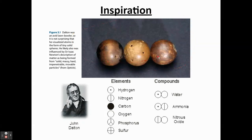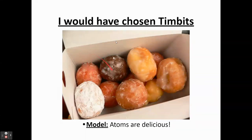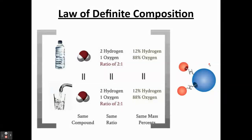Dalton's model was able to explain a lot of the laws at the time. For the law of definite proportion: water from two different samples is made up of 12% hydrogen and oxygen by mass. Dalton could say: I know why that is — oxygen has this mass and hydrogen has a different mass, and they combine in a ratio of one oxygen for two hydrogens. That explains the mass ratio of hydrogen to oxygen in samples of water.